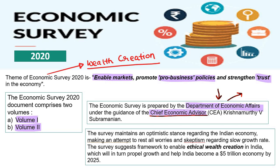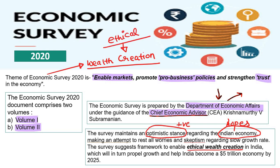The survey maintains an optimistic stance regarding the Indian economy. It suggests a framework to enable ethical wealth creation, which will help India become a 5 trillion dollar economy by 2025. Remember the target year — this is very important for your prelims.